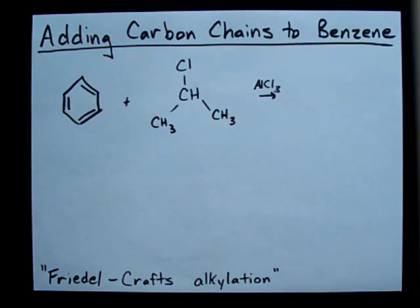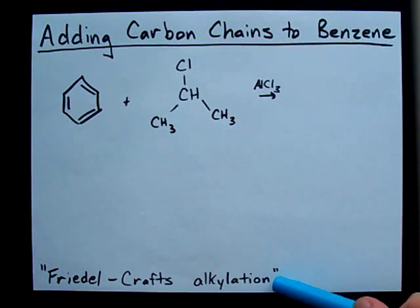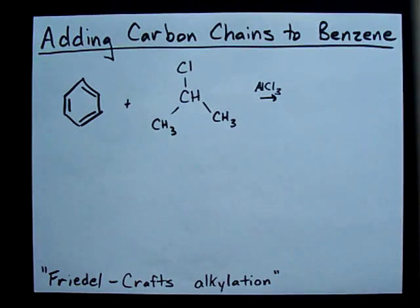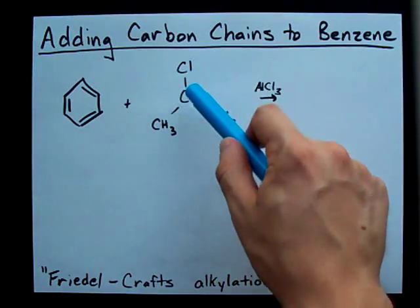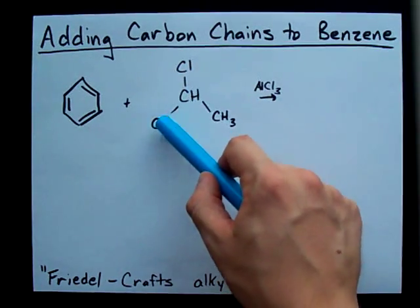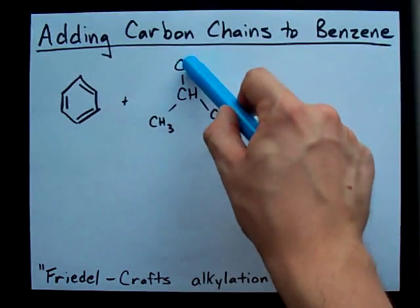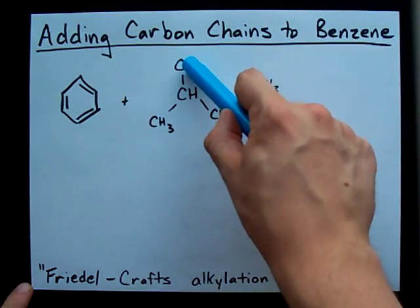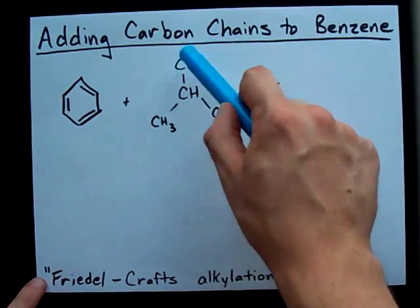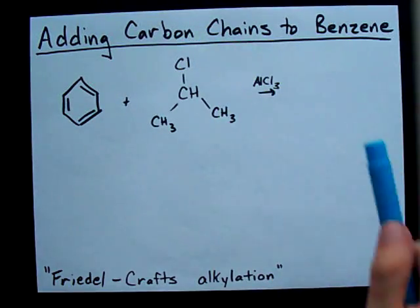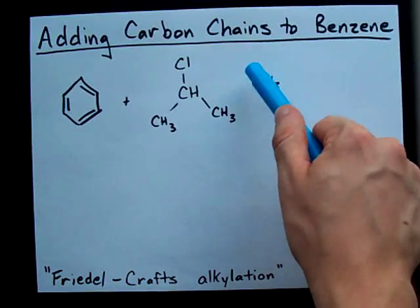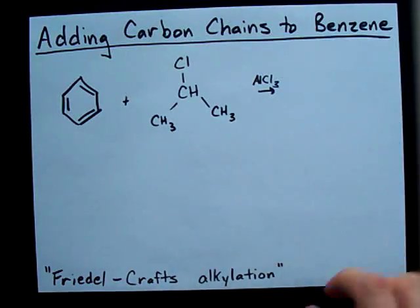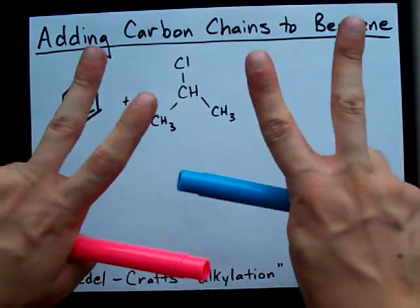Well, the answer is Friedel-Crafts alkylation, where you have an alkyl halide — an alkane with a halogen attached to it — and you're going to use aluminum chloride as a catalyst.